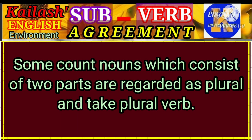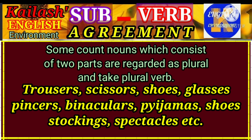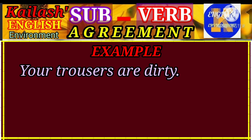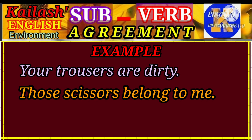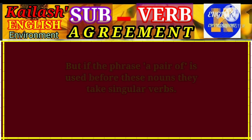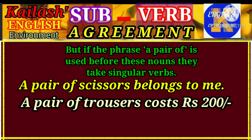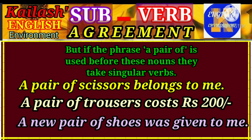Some count nouns which consist of two parts are regarded as plural and take a plural verb. They are trousers, scissors, shoes, glasses, pincers, binoculars, pyjamas, shorts, stockings, spectacles, etc. For example, 'Your trousers are dirty.' 'Those scissors belong to me.' 'Her shoes are black.' But if the phrase 'a pair of' is used before the nouns, they take a singular verb. For example, 'A pair of scissors belongs to me.' 'A pair of trousers costs 400 rupees.' 'A new pair of shoes was given to me.'